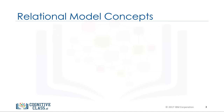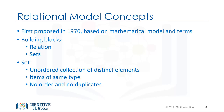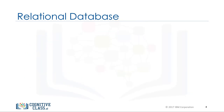The relational model was first proposed in 1970, and is based on a mathematical model and mathematical terms. The building blocks of the relational model are relations and sets. The relational model of data is based on the concept of relation. A relation is a mathematical concept based on the idea of sets. A set is an unordered collection of distinct elements — a collection of items of the same type with no order and no duplicates. A relational database is a set of relations.